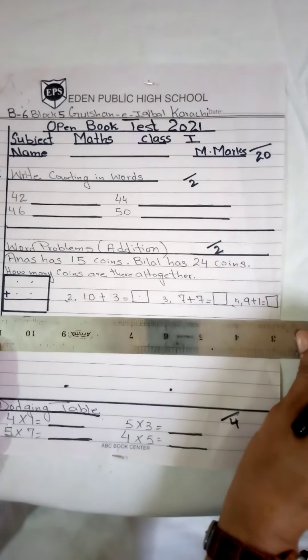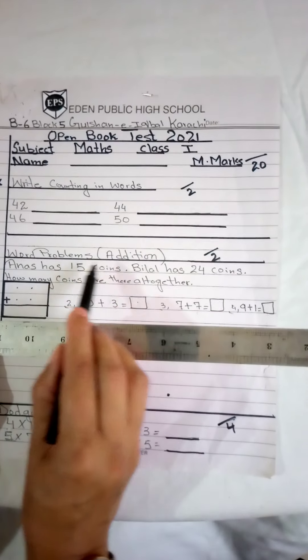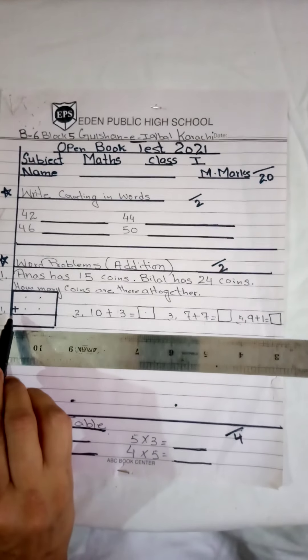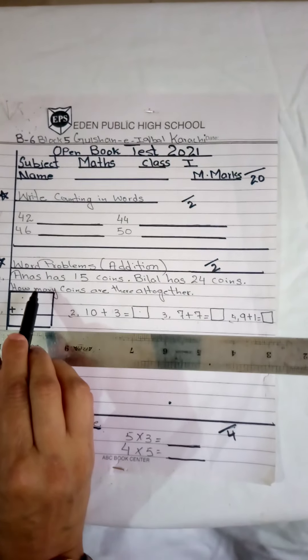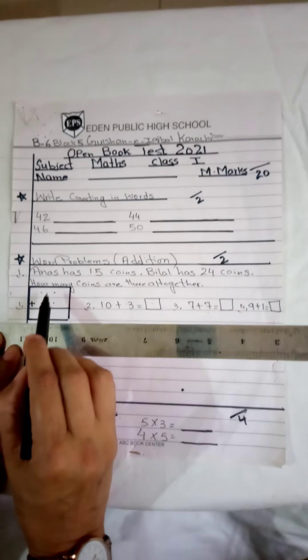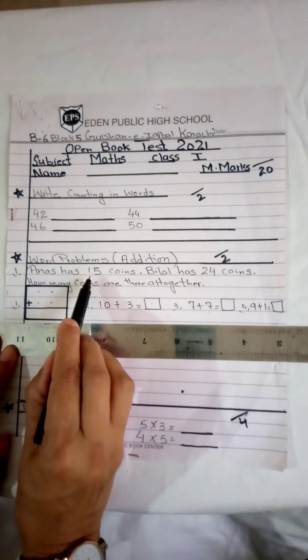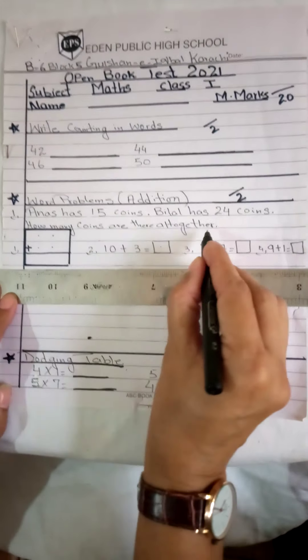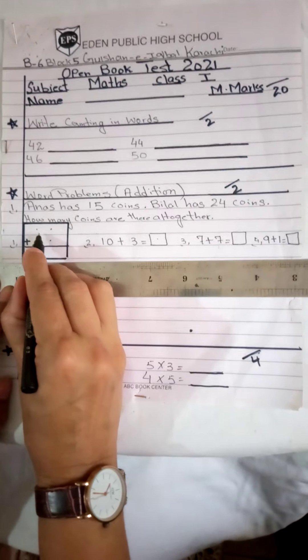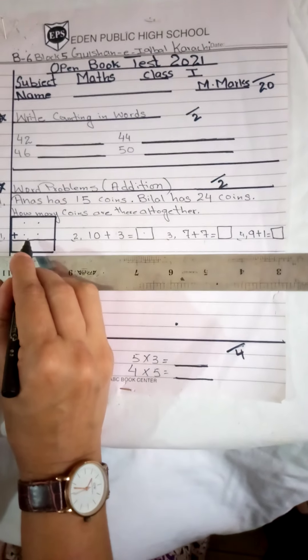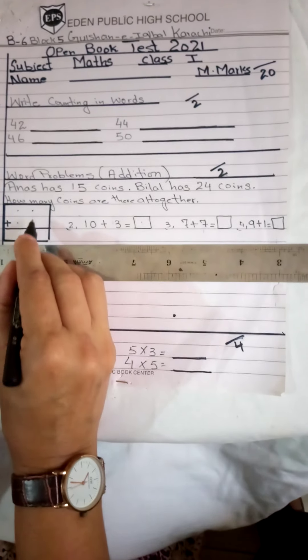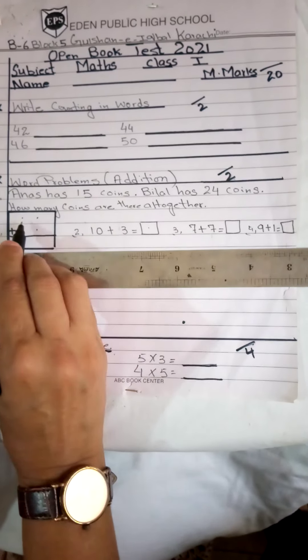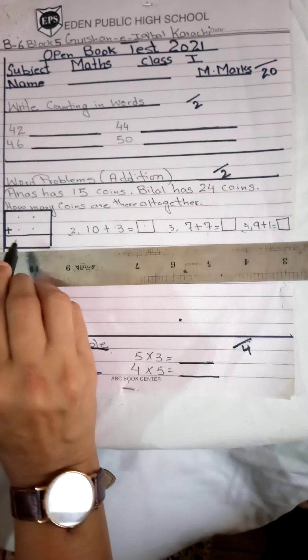Now our second work is word problems, addition. What do you call addition? What is the sign? Plus. Here the teacher has given you a sum. Do it first with me and understand it, and then tell your answer. Anas has 15 points, Bilal has 24 points. How many points are there all together? So Anas has 15 points, you have to mention here 15. Then Bilal has 24, you have to mention them. Then you have to use the right hand number first, which is the right hand number. Then you have to use the left hand number. You have to write the answer here.